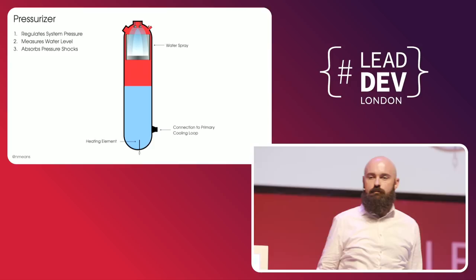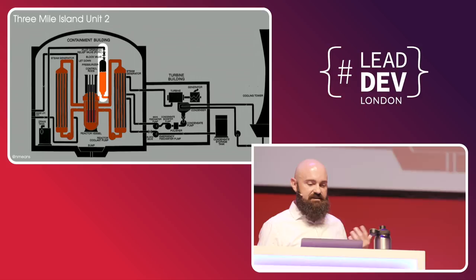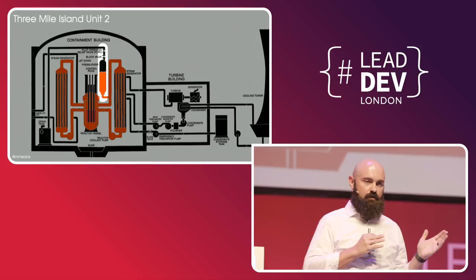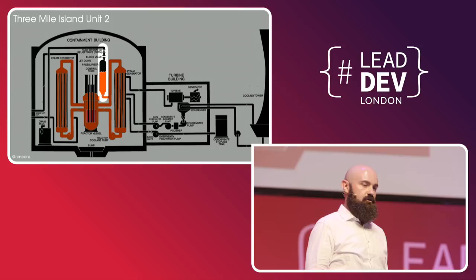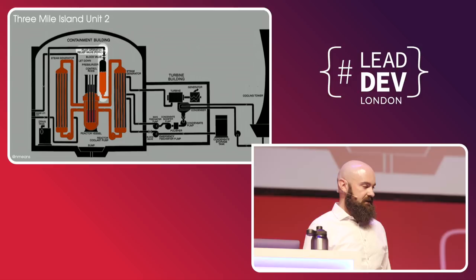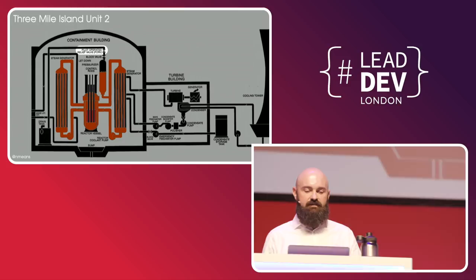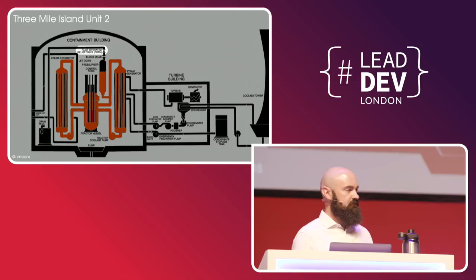The steam in the pressurizer absorbs the initial shock of the secondary loop going offline, but the pressurizer is really only designed for finite pressure adjustments. It would take several minutes to regulate the kind of pressure occurring in the reactor right now — about 200 psi over standard operating pressure and continuing to climb. So the second thing that happens is the pilot-operated relief valve opens. If you've heard anything about the Three Mile Island accident, this is probably the component that sticks in your head — this is the one that gets all the press.